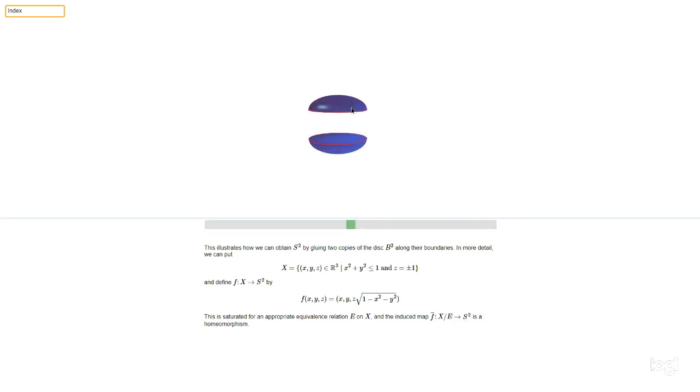So that's a bijection, but we really want it to be a homeomorphism. And so it's kind of a consequence of the definition of the quotient topology that this map is kind of more or less automatically going to be continuous, this f-bar.